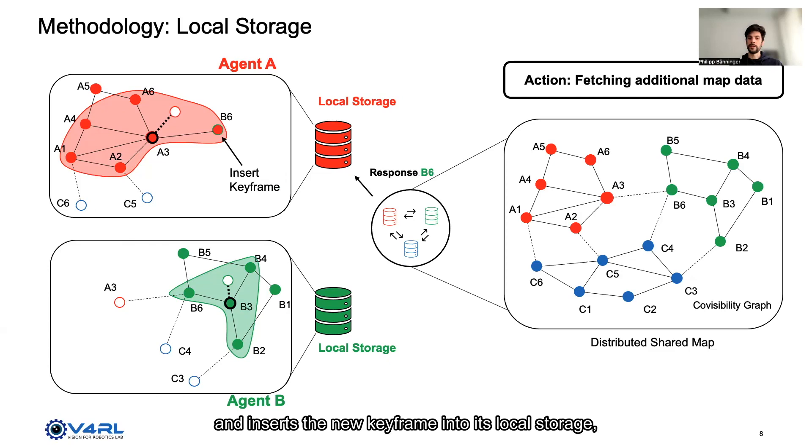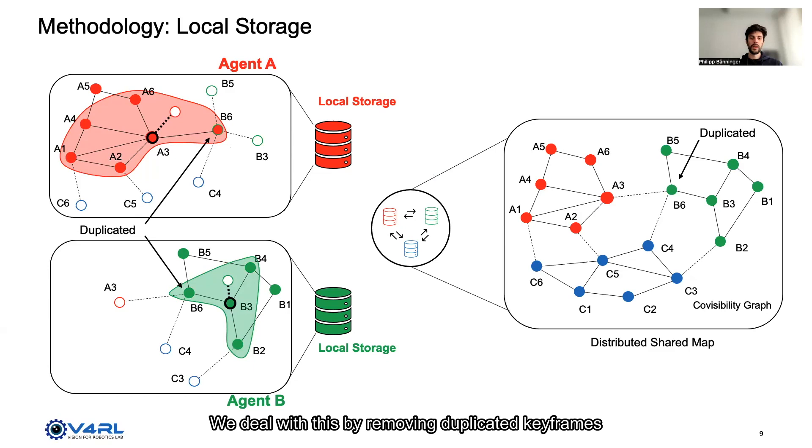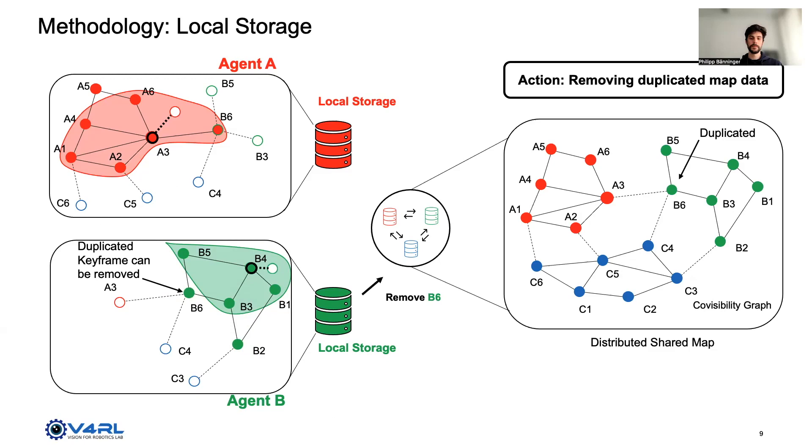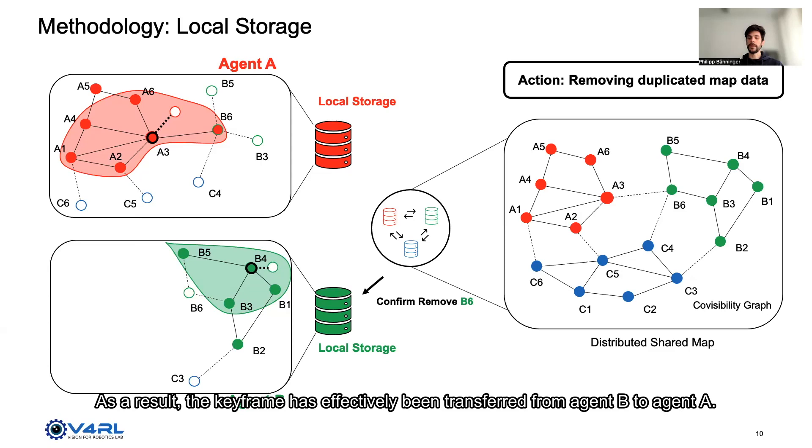However, this process leads to duplication of map data across agents. We deal with this by removing duplicated keyframes as soon as they leave the local neighborhood. The agent informs the shared map about the removal and the keyframe is removed. As a result, the keyframe has effectively been transferred from Agent B to Agent A.